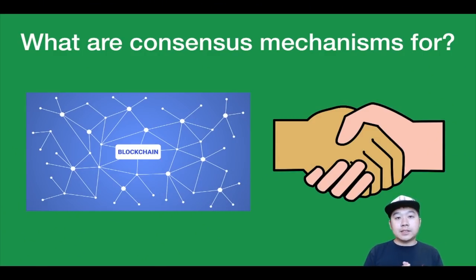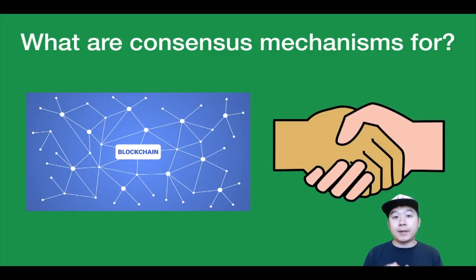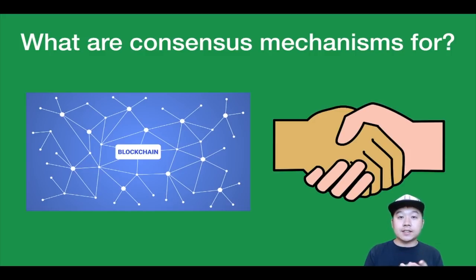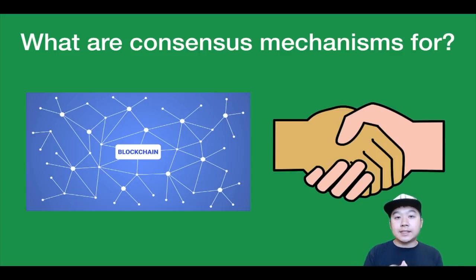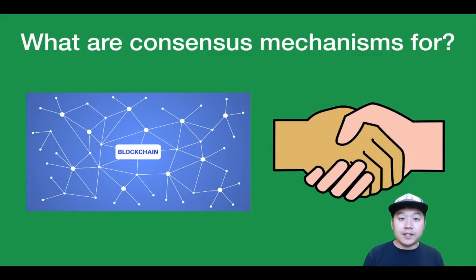So what are consensus mechanisms used for? They're used so that blockchain networks, which are a network of peers, can come to agreement about the state of the network. This means it helps you answer the following questions: Is the blockchain valid? Which block should we add next? Who has the right to add a block and when? This is particularly important because in a blockchain network, you have peers who you don't necessarily know or trust, so you need a mathematical way to set up the system so that you can all come to agreement, even when some people may not be operating fairly.